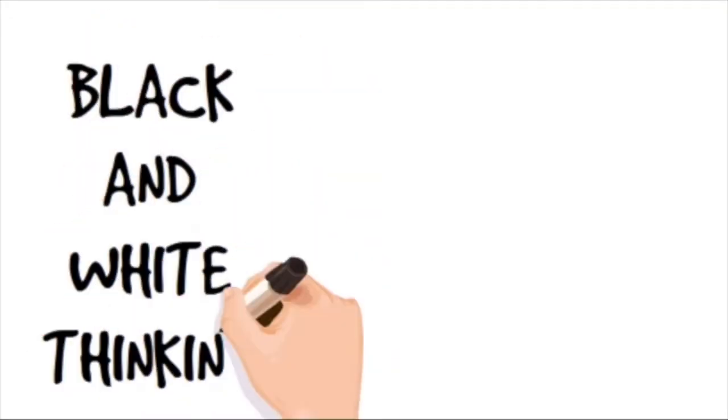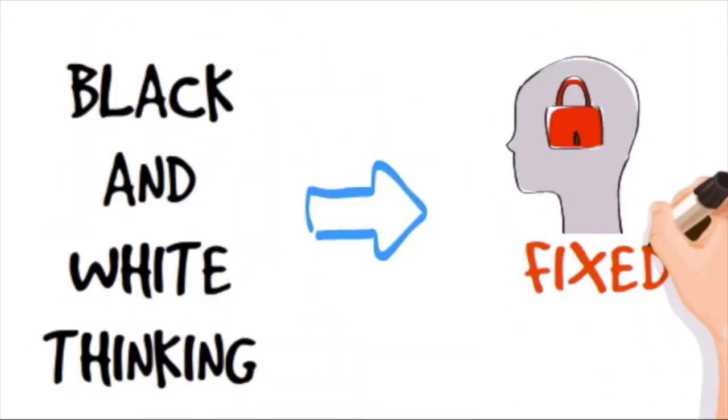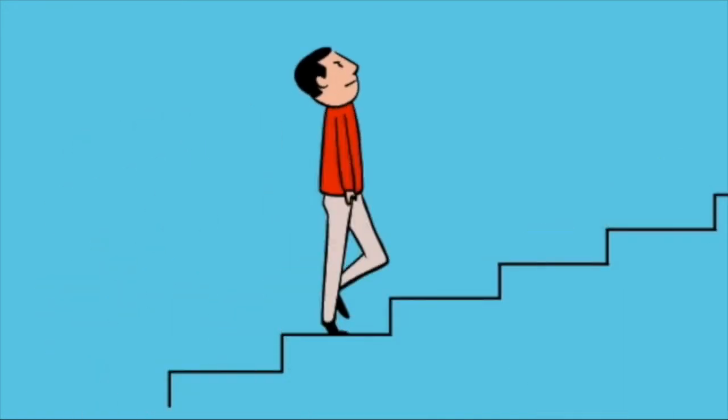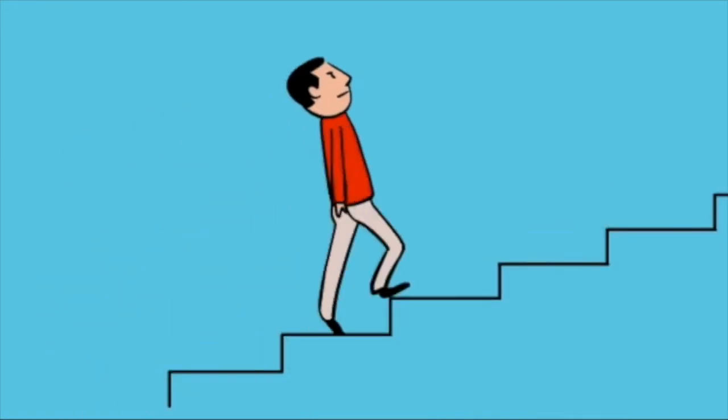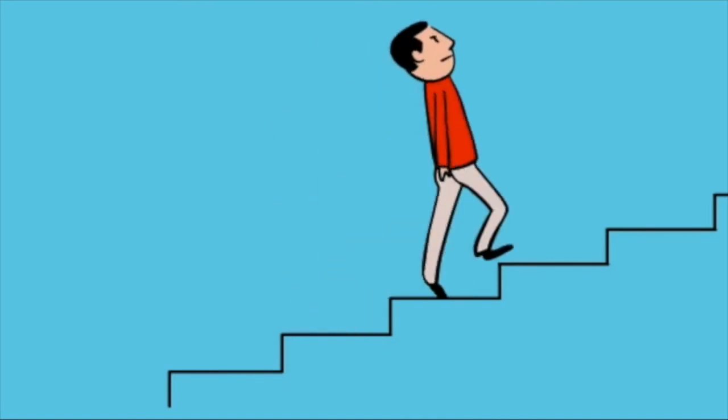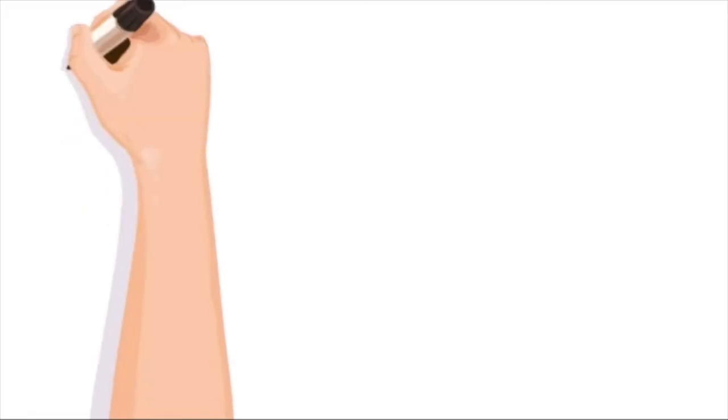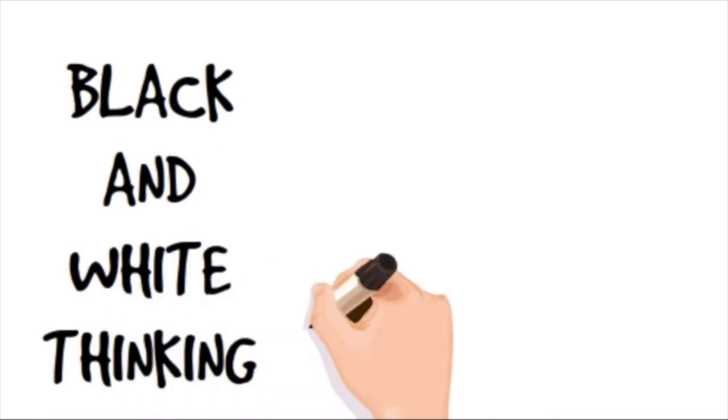Black and white thinking equals a fixed mindset. In order to make the changes that you want to make, you're going to have to learn how to bounce back over and over again. Every time you take that step back, you're going to have to learn how to get back up and keep going. Because black and white thinking is what keeps the fixed mindset in place.